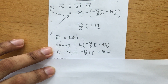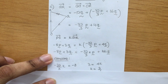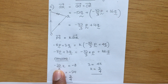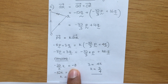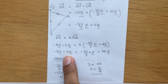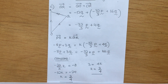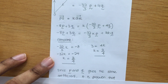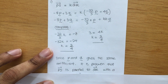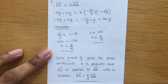Comparing component p: negative 32 over 3 times K equals negative 8, so negative 32K equals negative 24, giving K equals 3 over 4. Comparing component q: 4K equals 3, so K equals 3 over 4. Both components give the same K value. Since p and q give the same coefficient K, it is proven that PS is parallel to QR, with the relationship Vector PS equals 3 over 4 of Vector QR.